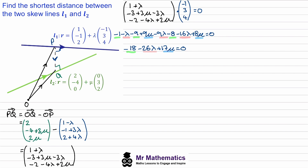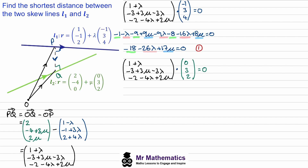We collect the constant terms, the λ terms, and the μ terms to get −18 − 26λ + 17μ = 0. We'll call this equation one. We now have one equation involving two unknowns, so we need a second equation involving both λ and μ. We can find that second equation because P to Q is also perpendicular to the direction vector of line L2.